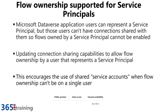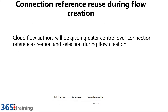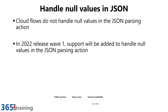This will be general availability in April 2022. Another Power Automate one: connection reference reuse during flow creation. How many times have I done this where it creates a different connection reference and I end up with multiple connection references in my solution? Now you'll get more control over which connection reference is used when creating a flow or updating a flow that has new actions. This will hit in April 2022.